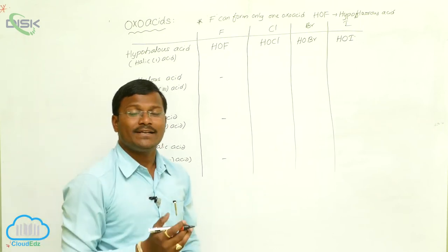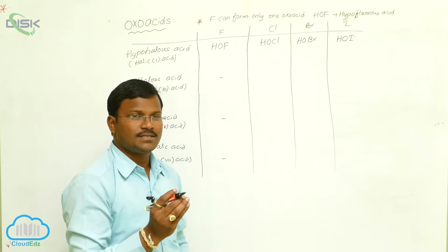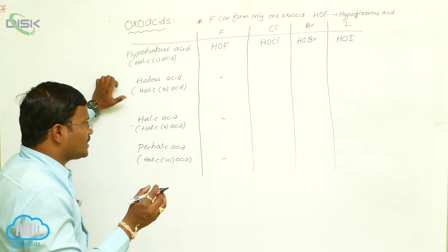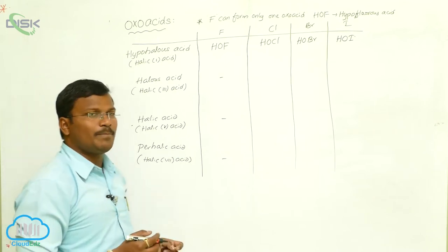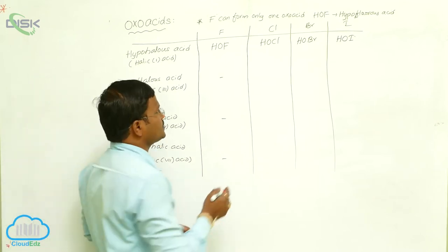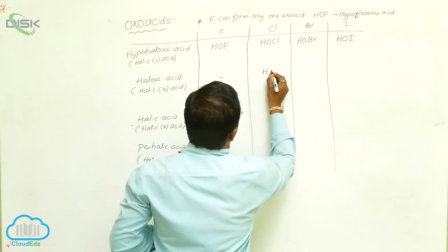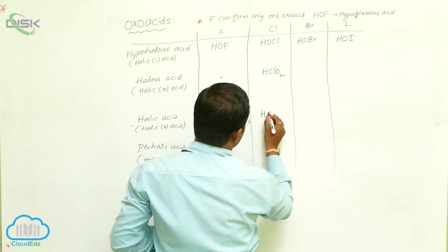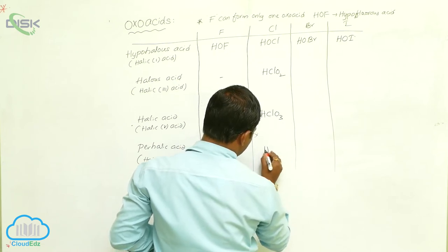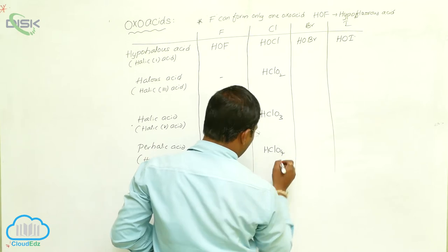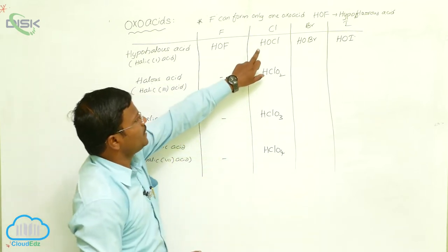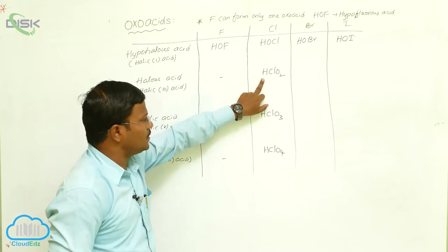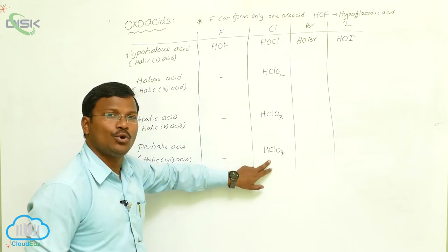Fluorine never produces higher oxoacids because, due to its high electronegativity and small atomic size, it cannot exhibit +3, +5, or +7 oxidation states. Chlorine, however, can form HClO2 (chlorous acid), HClO3 (chloric acid), and HClO4 (perchloric acid).